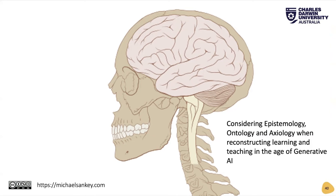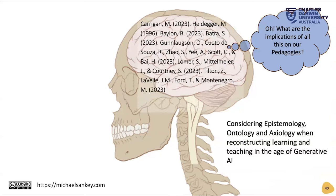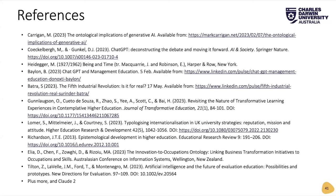I suppose, though, at the end of the day, if I am considering epistemology, ontology, and axiology when thinking about reconstructing learning and teaching in this age of generative AI, I then think about what the implications of all this are on our pedagogies. Well, to do that, I printed out and read through a whole lot of readings, processed this in my mind, and came out with this presentation. But in all of this, let's not forget the agency of the human GPT. Finally, here are the references I used for this presentation. I hope you find this helpful.